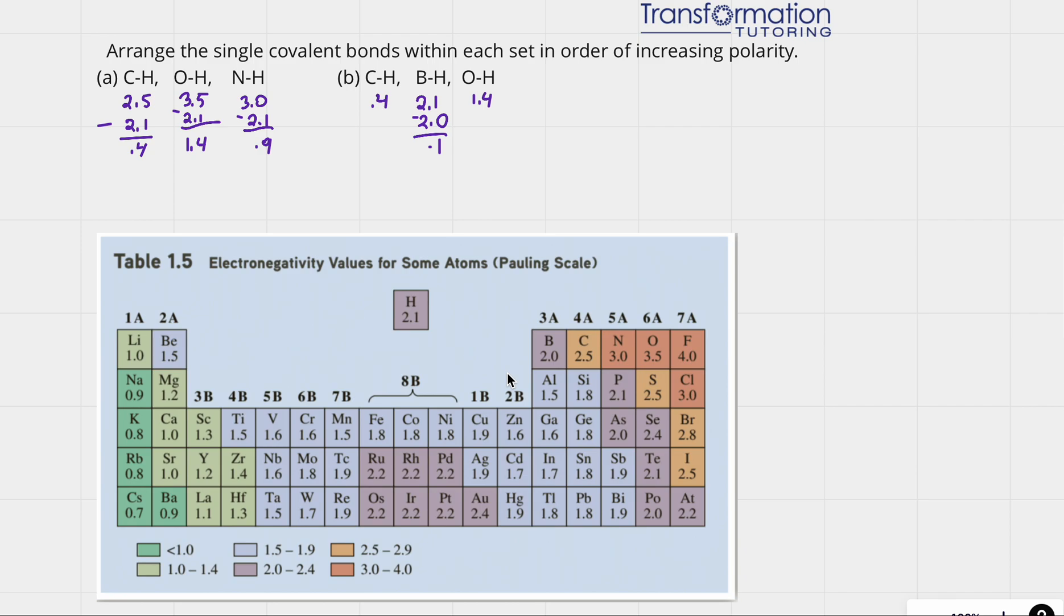In order for us to figure out how polar a bond is, we have to subtract electronegativity of one atom from another to find electronegativity difference. What is the difference between electronegativities of the two atoms that are covalently bonded? The higher the electronegativity difference is, the more polar our bond will be.